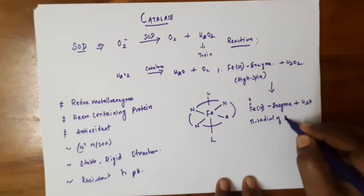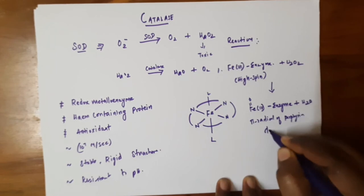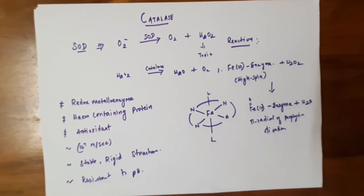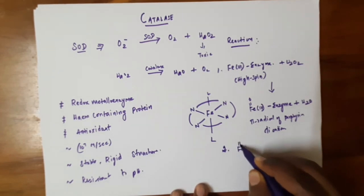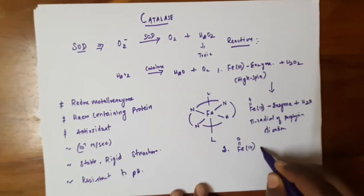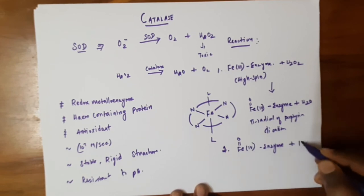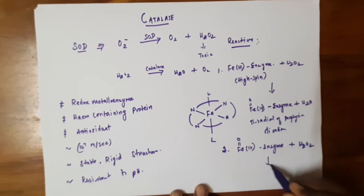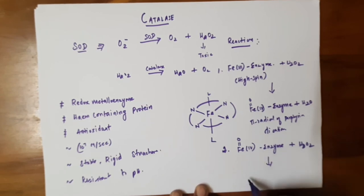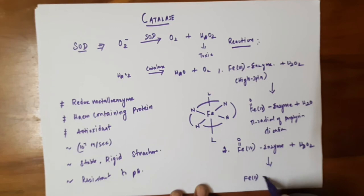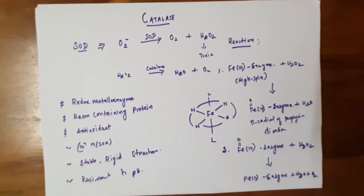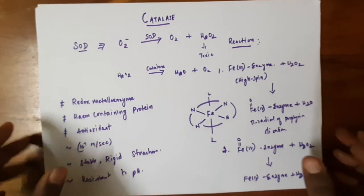This forms the porphyrin π-dication intermediate. In the second step, the Fe⁴⁺ enzyme is treated with hydrogen peroxide, which converts Fe⁴⁺ back to Fe³⁺, regenerating the enzyme and producing water and molecular oxygen. This is the simple overall reaction of catalase.